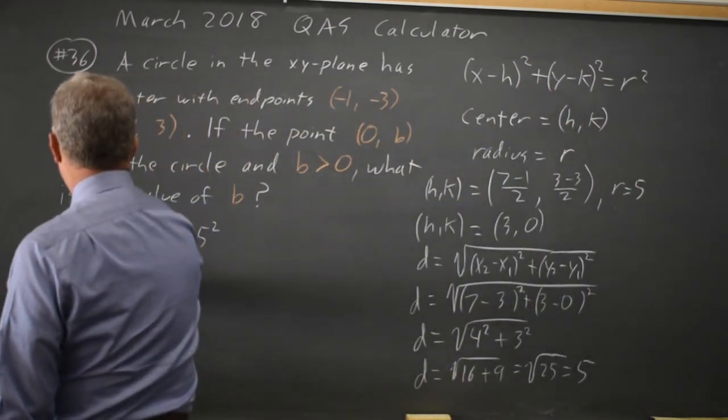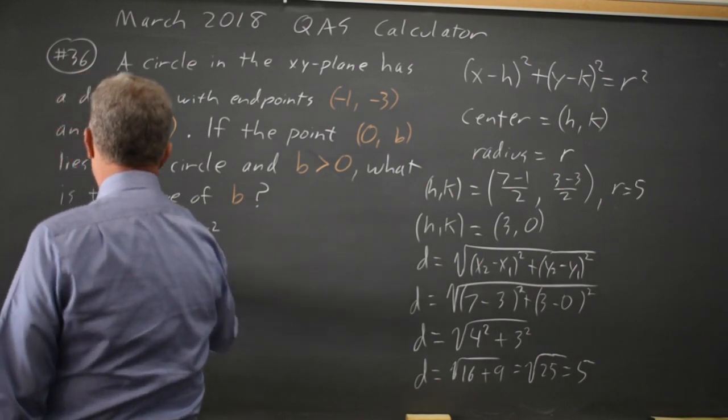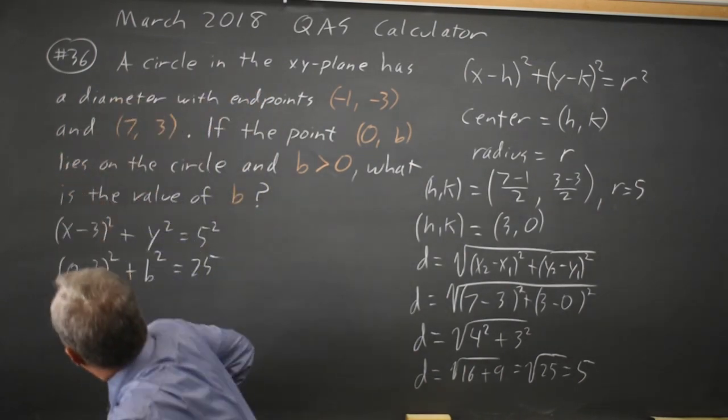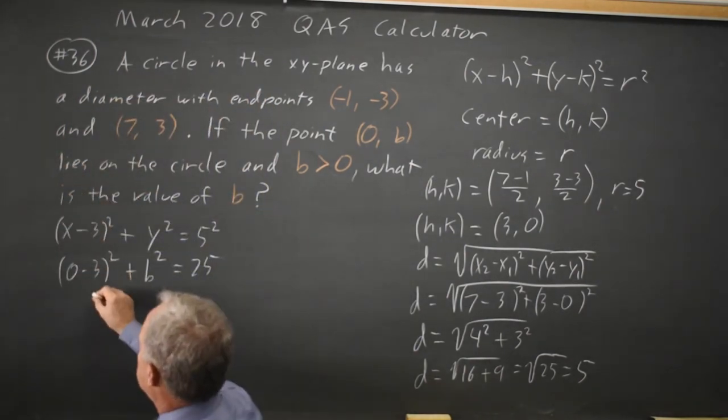So that's 0 minus 3 squared plus b squared equals 5 squared, which is 25. 0 minus 3 is negative 3. Negative 3 squared is 9.